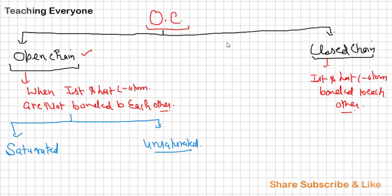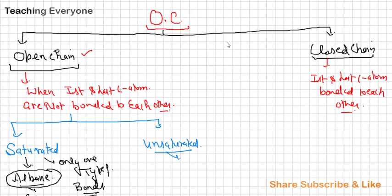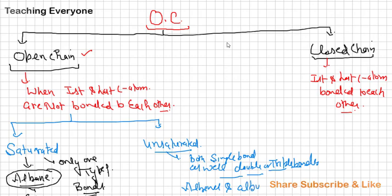So what are saturated compounds? From the example you know very well, alkanes. So alkanes are saturated compounds which contain only one type of bond. These are alkanes. Whereas unsaturated contains both single bonds as well as double or triple bonds.